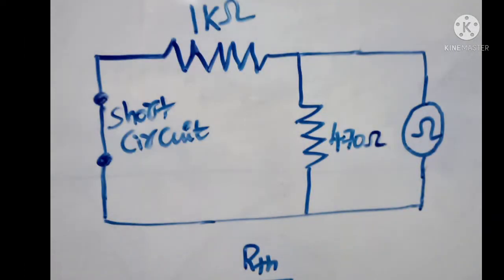The second step is to find Rth, which is the Thevenin resistance. In order to find Thevenin resistance, we again need to open circuit the terminals across which the load resistor is connected and connect an ohmmeter across those terminals to measure the resistance. Here, the source is replaced with a short circuit — we connect a small wire — because when finding Rth, every source is replaced with its internal resistance. As the source is an ideal voltage source, its internal resistance is zero, so we replace it with a short circuit.